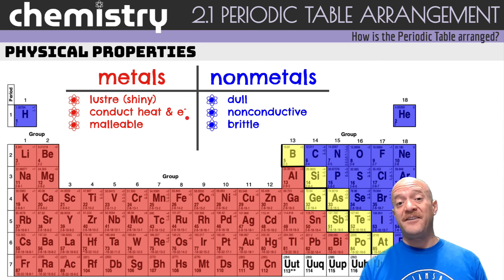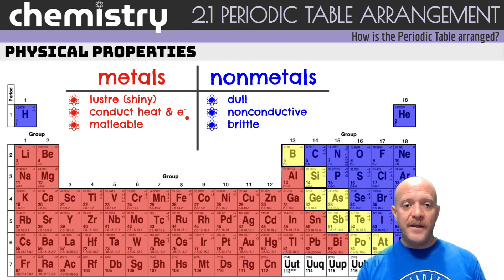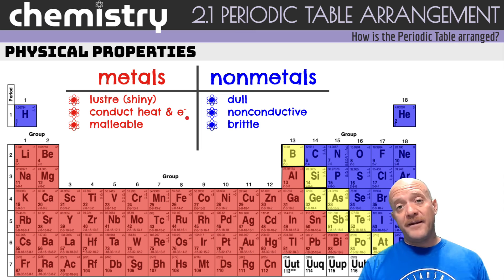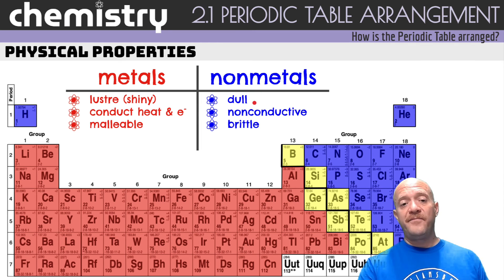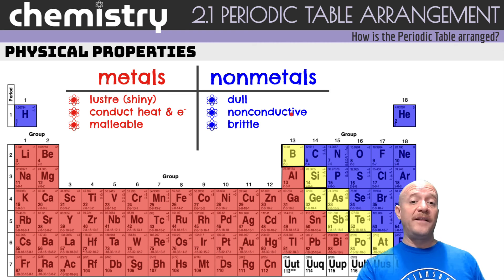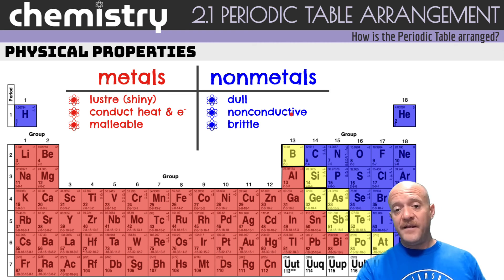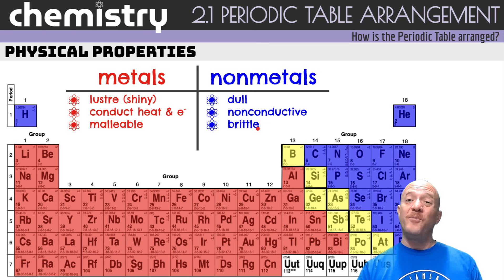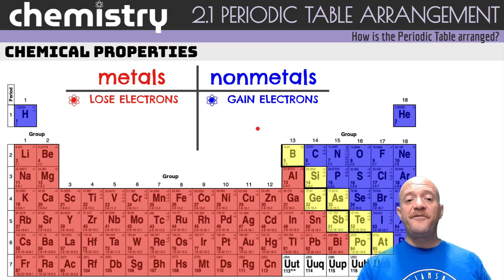Nonmetals, on the other hand, are dull — they don't shine. They are not conductive for heat or electricity. They are also brittle, meaning if you bend them they will break.